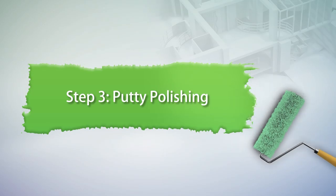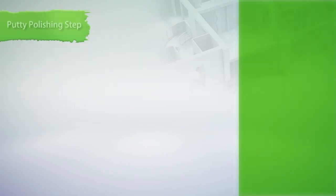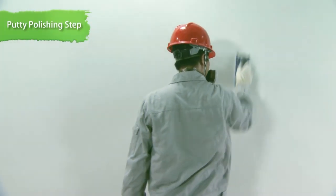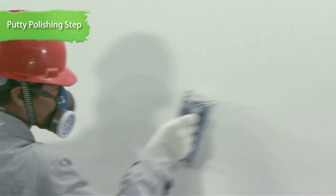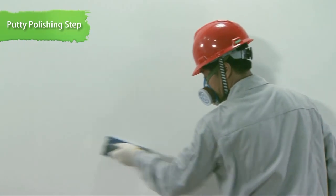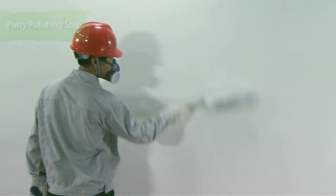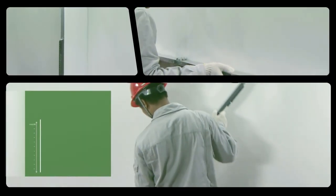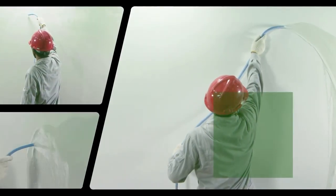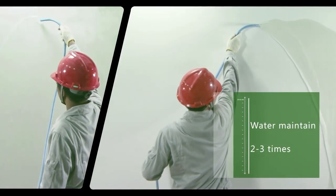Step 3: Putty Polishing. Select suitable sanding method and tools to sand the putty, apply marks and convicts and concave spots until they are flat and smooth. Water maintaining two to three times.